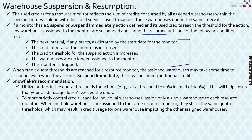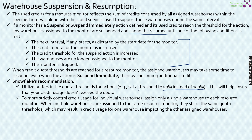Even if we specify the suspend immediate action, it will take some amount of time to actually get suspended. So the Snowflake recommendation is to utilize buffers in the quota threshold for actions — for example, set the threshold at 90% instead of 100%. This will help to ensure that your credit usage doesn't exceed the quota. If you are targeting 100 credits, specify the threshold limit at 90%.